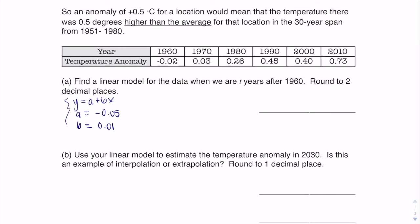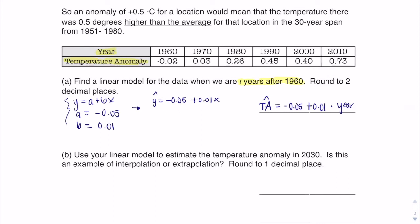We've gotten our information from the calculator. Instead of writing general a and b, I'm going to write negative 0.05 plus 0.01x. I need to remember to put the hat over it, and also to include the actual context of my variables. We had years after 1960 and temperature anomaly. So I'll say: I can predict temperature anomaly with the equation negative 0.05 plus 0.01 times years after 1960. You can write just 'years,' but keep in mind it must be years after 1960 when you manipulate it.